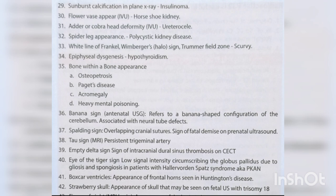Eye of the tiger sign — low signal intensity circumscribing the globus pallidus due to gliosis and spongiosis in patients with Hallervorden-Spatz syndrome, also known as PKAN. Boxcar ventricles — appearance of frontal horns seen in Huntington's disease. Strawberry skull appearance may be seen on fetal ultrasound with trisomy 18.